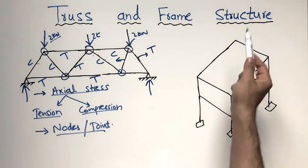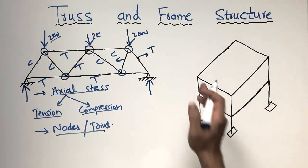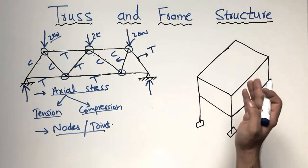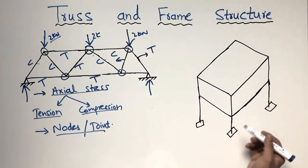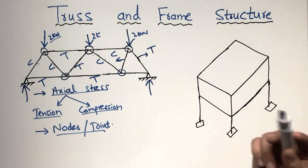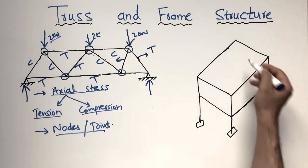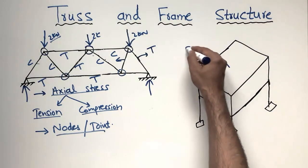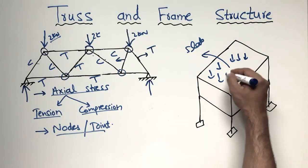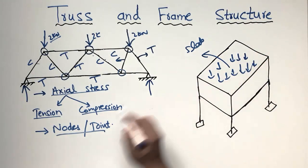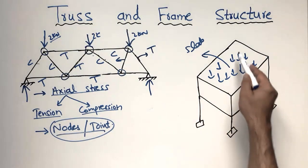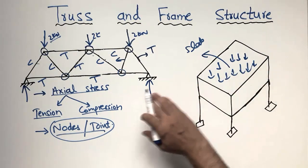Now to define the frame structure — a frame is quite different from the truss structure. In the case of frames, the frame structure is a combination of beams, columns, slabs, and footing. You may have different types of beams like lintel beams, simply supported beams, or cantilever beams. Unlike the truss structure where loads must be placed on nodes, in a frame structure you can place the load at any point of your structure.